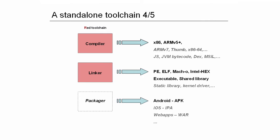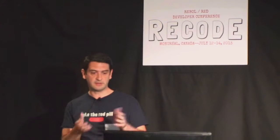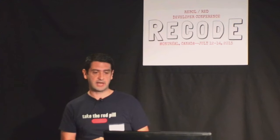Currently the toolchain is bootstrapped in Rebol 2 — we've been running that for two years. But the final RED should have a JIT compiler, and to have that JIT compiler we need to go self-hosted — RED written in RED. That's the only way to get a proper JIT compiler, and we'll most probably work on that next year.